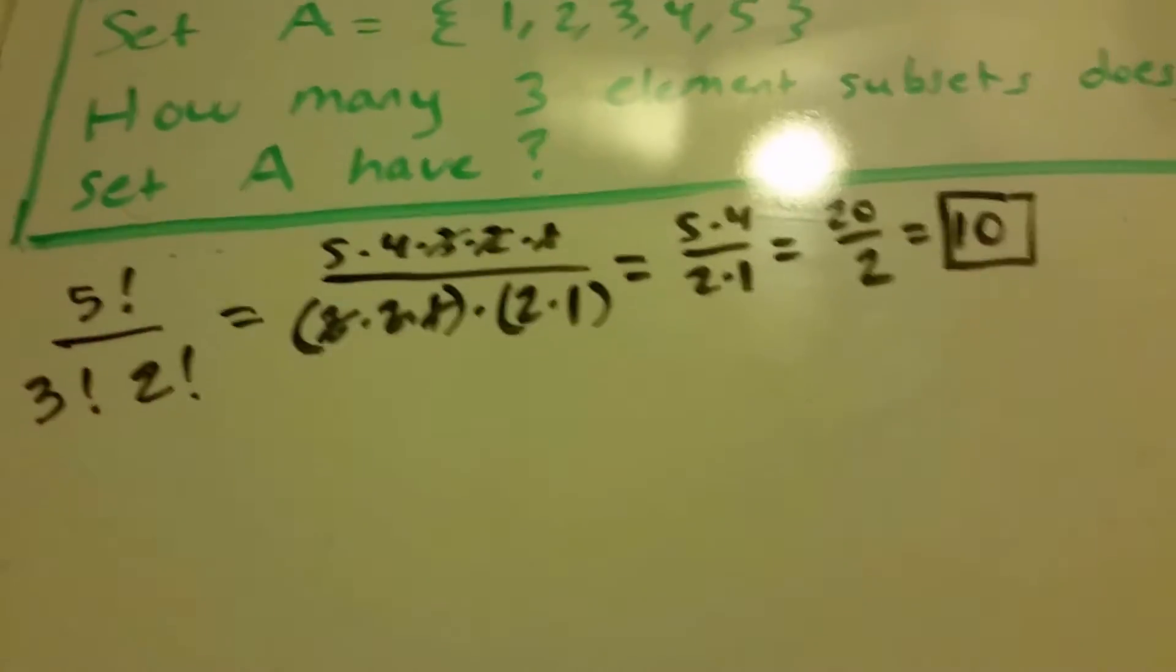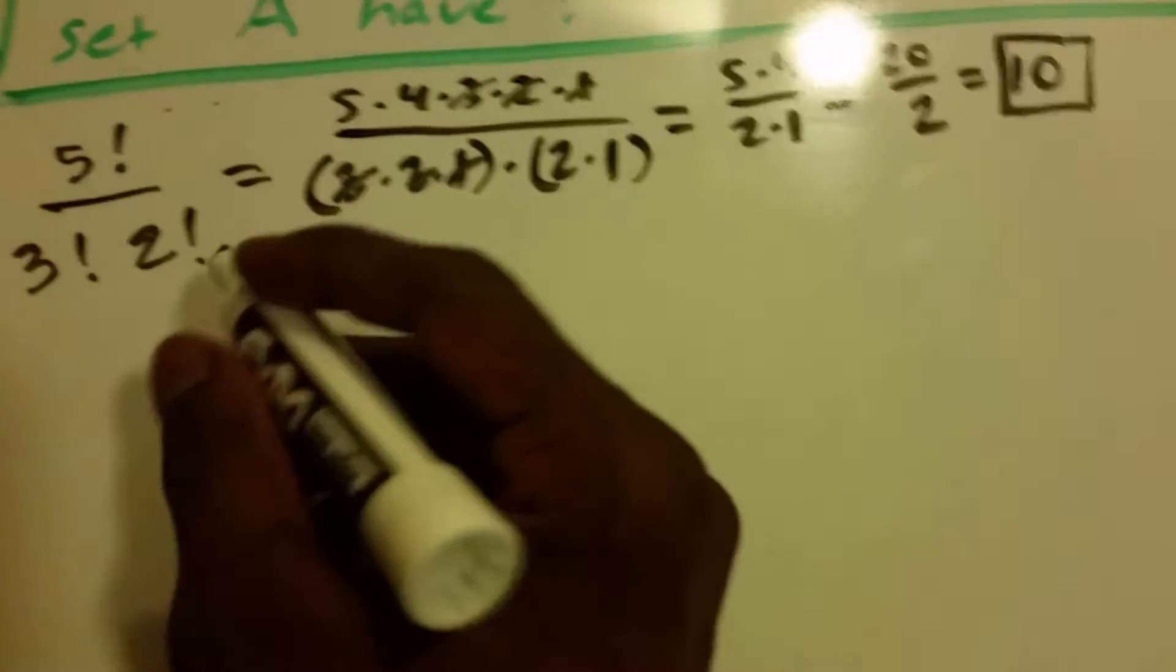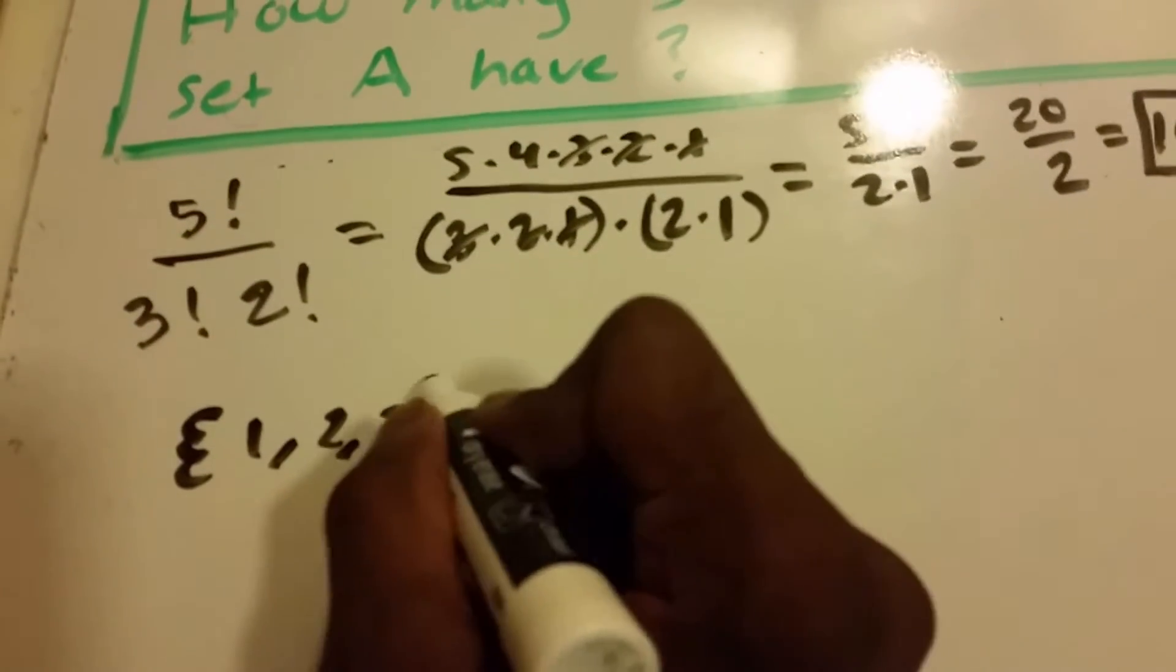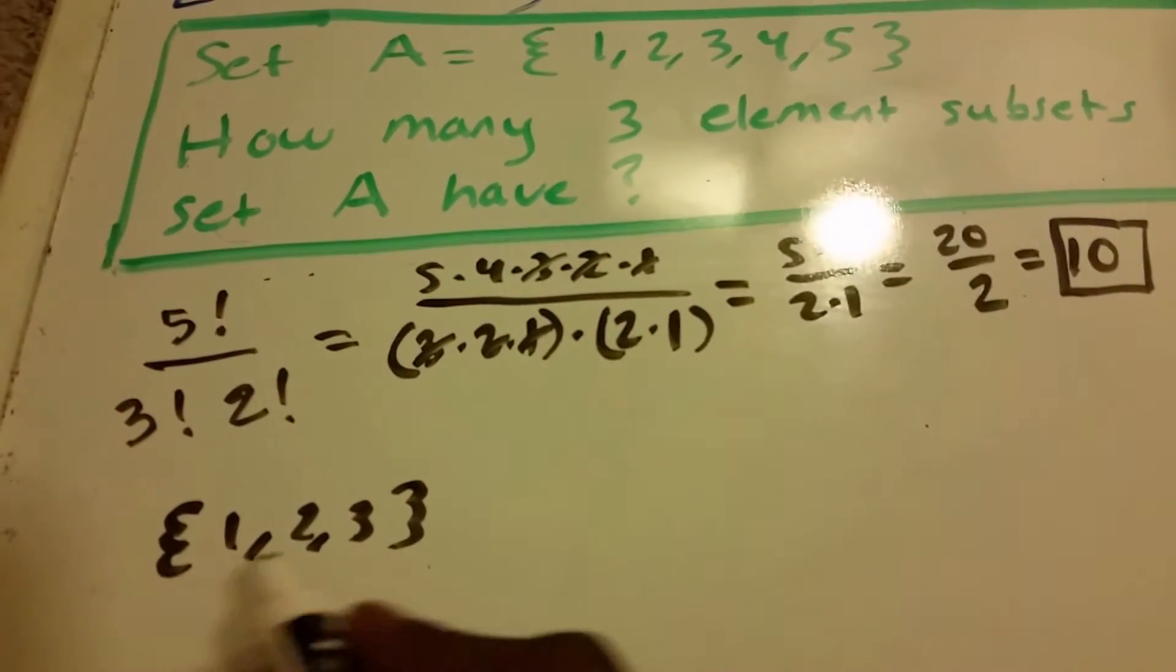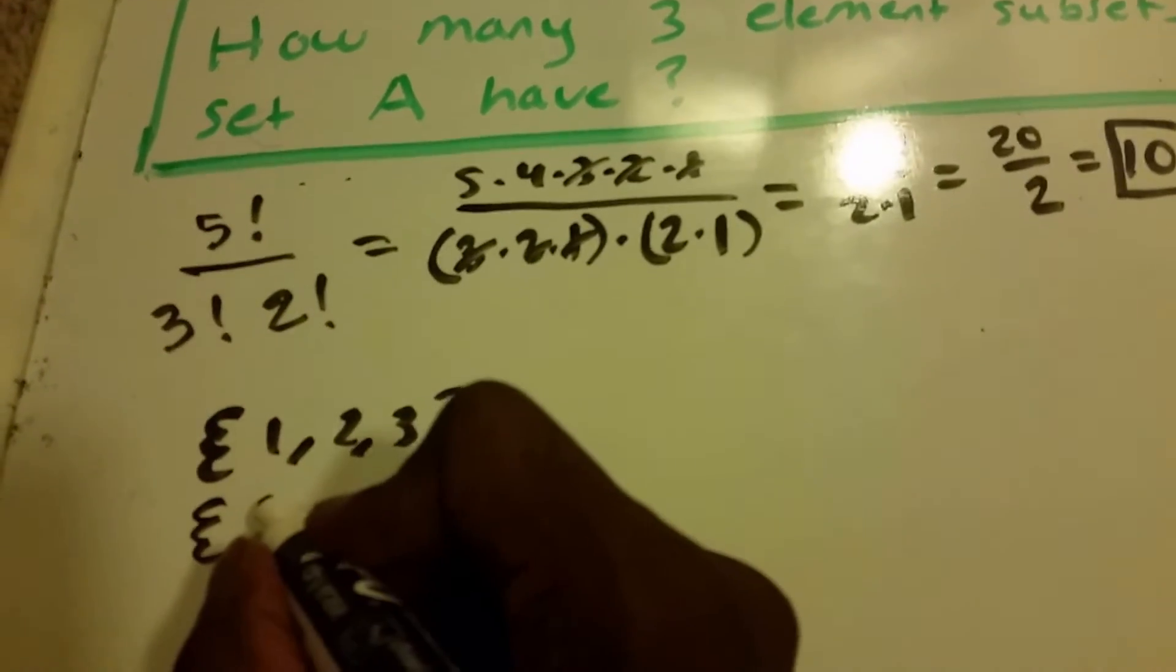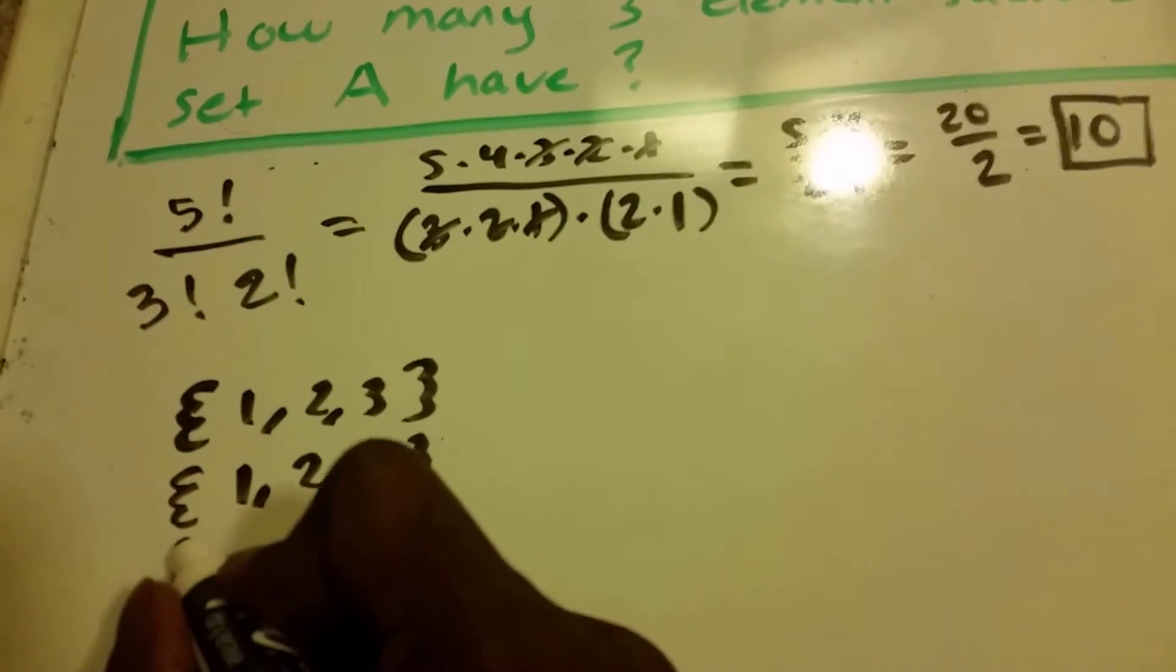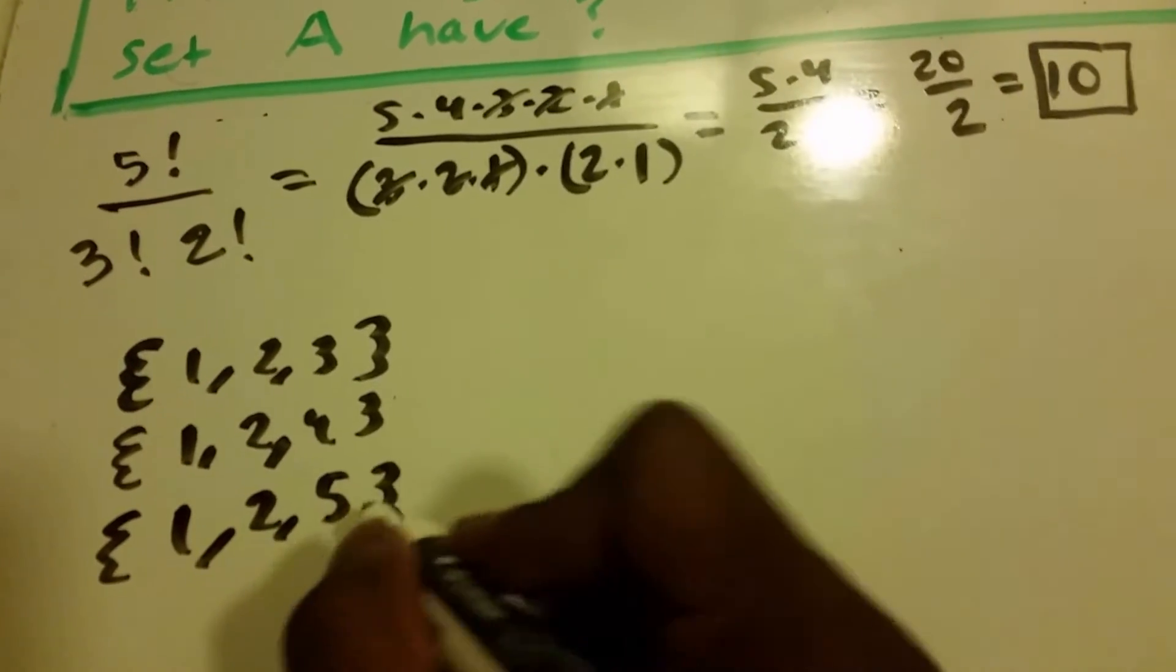So let's check this. Let's see if we can get 10 three element subsets. So I'm going to try to write them out here. So we get 1, 2, and 3, because that's in set A, and we're getting 3 element subsets. Next I'm going to do 1, 2, 4, and 1, 2, 5.